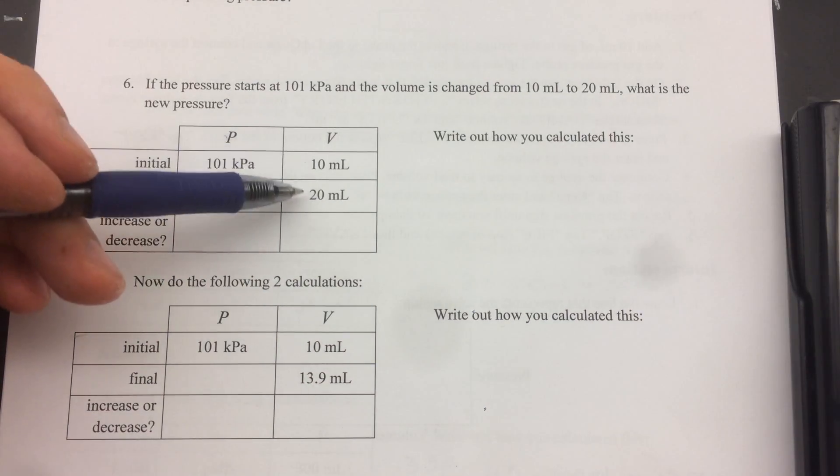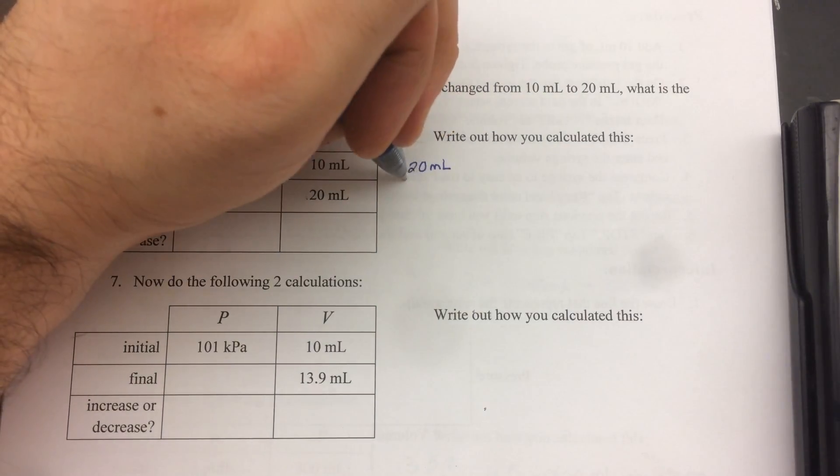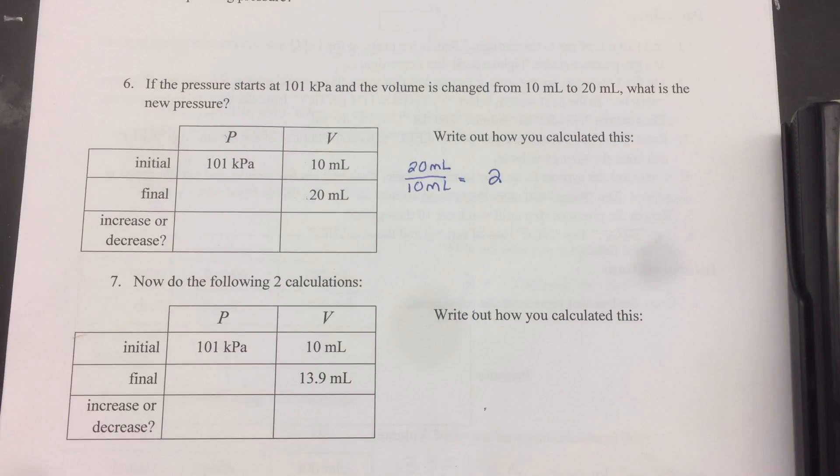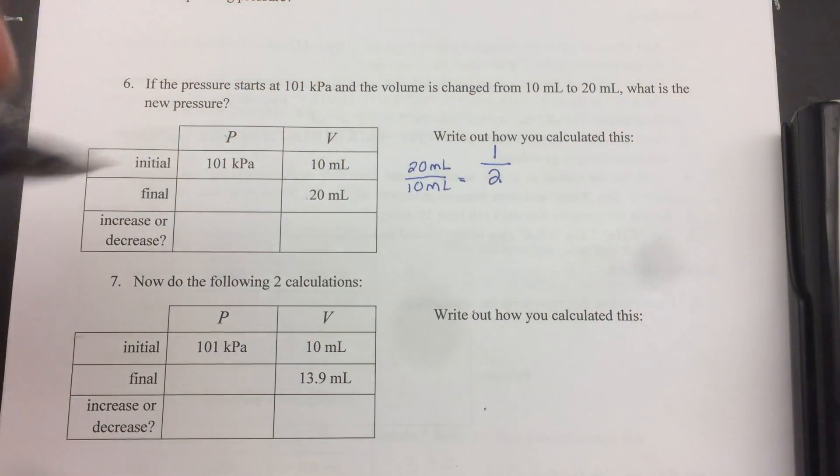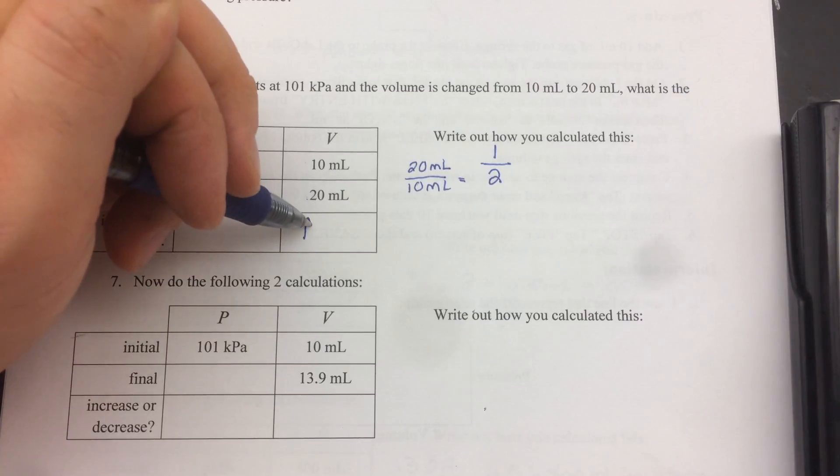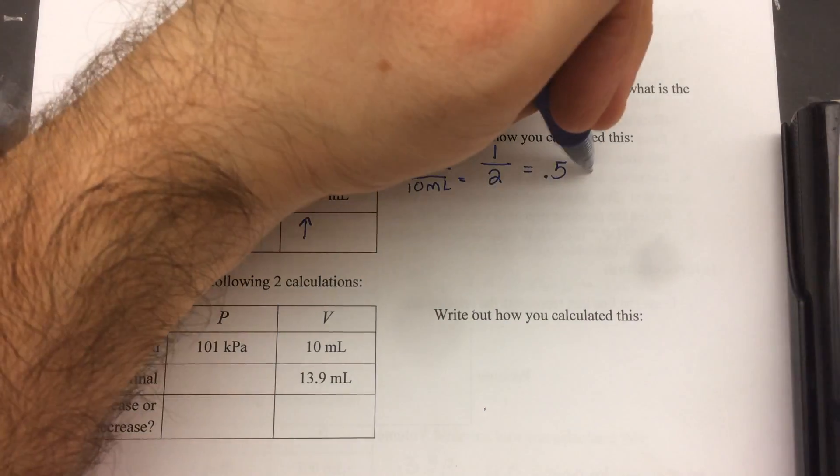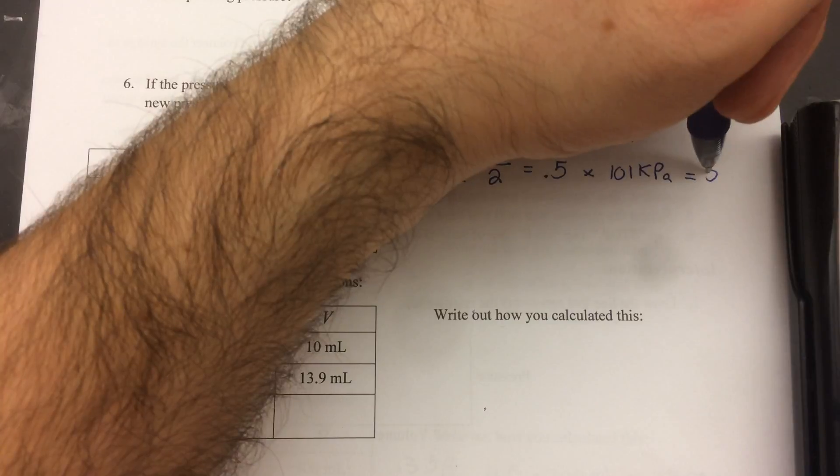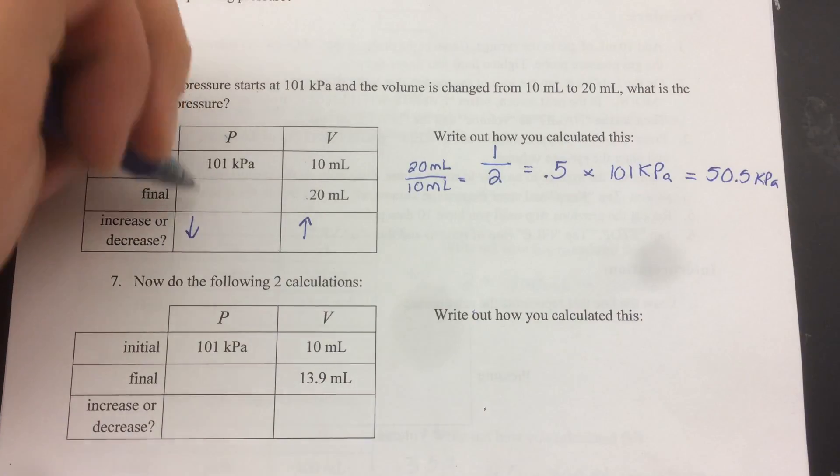All right. So for this first one, we have the volume increasing. It's going from 10 to 20. Let's see what the factor is in this case. So we find it the same way we did earlier. So 20 milliliters over 10 milliliters. That ends up being a factor of two. But because it's an inverse relationship, what we have to do is put this on the bottom of the fraction. So it gets cut in half. So what we're going to predict is if this is going to go up, this is going to go down. So one half is 0.5 in your calculator, times 101 kPa, and that equals 50.5 kPa. Okay. We predicted it would go down, 101 to 50.5.